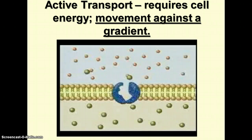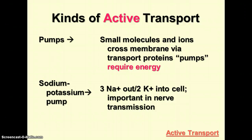Active transport is a process of moving things using energy — moving things against the concentration gradient. Several different kinds of active transport exist. One kind is a pump, as illustrated in the video. Small molecules and ions can cross the membrane via these pumps, which require energy. The example shown is the sodium-potassium pump, which pushes three sodium ions outside the cell and brings two potassium ions inside the cell. This is an important process in the transmission of nerve impulses.